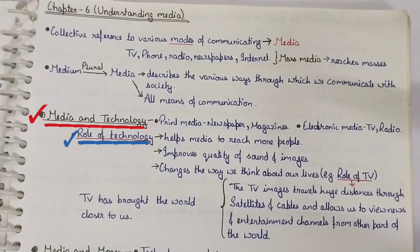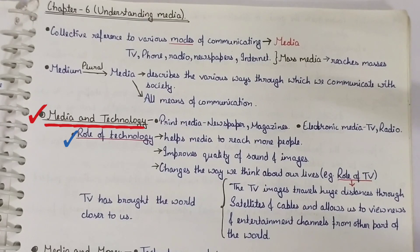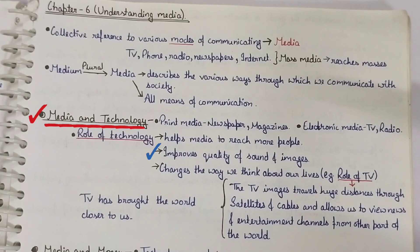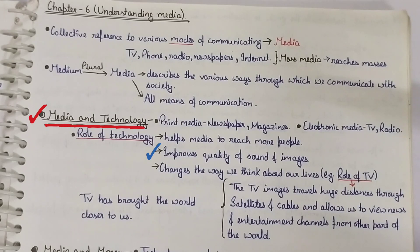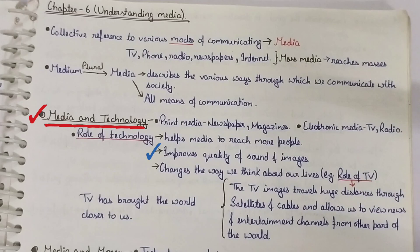What is the role of technology? Technology helps media to reach more people. It also improves the quality of sound and images in our media, as well as in our modes of communication — radio, television, internet, and newspaper. If technology is more advanced, the sound and image quality will improve.